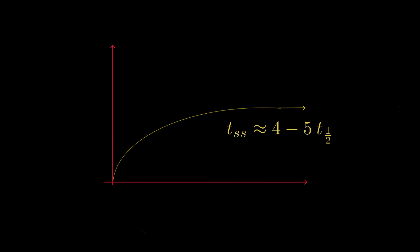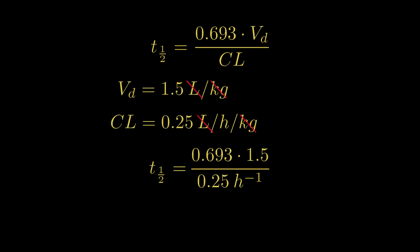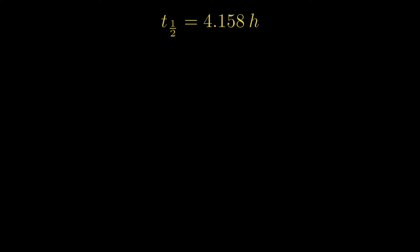So let's do the math for finding half-life, which we can do by the following equation. Half-life is the natural log of 2 times V over the clearance. We just plug in our numbers and find that the half-life is 4.158 hours, and 4 times that is about 16 hours.